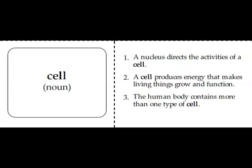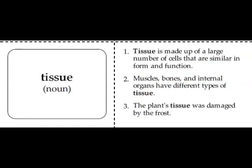Here's the first word that should go in your vocabulary book. The word is cell. A cell is the smallest unit of living things. It's also the body's building blocks. Make sure you write cell in your vocabulary book. The next word to put in your vocabulary book is tissue. Tissue is a group of cells that perform the same job in living organisms. Be sure to add the word tissue to your vocabulary book.